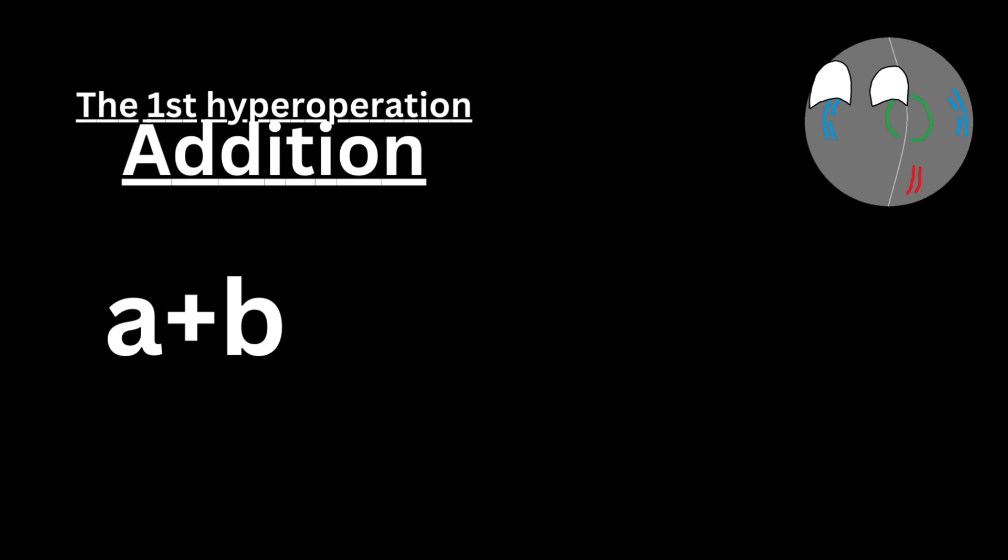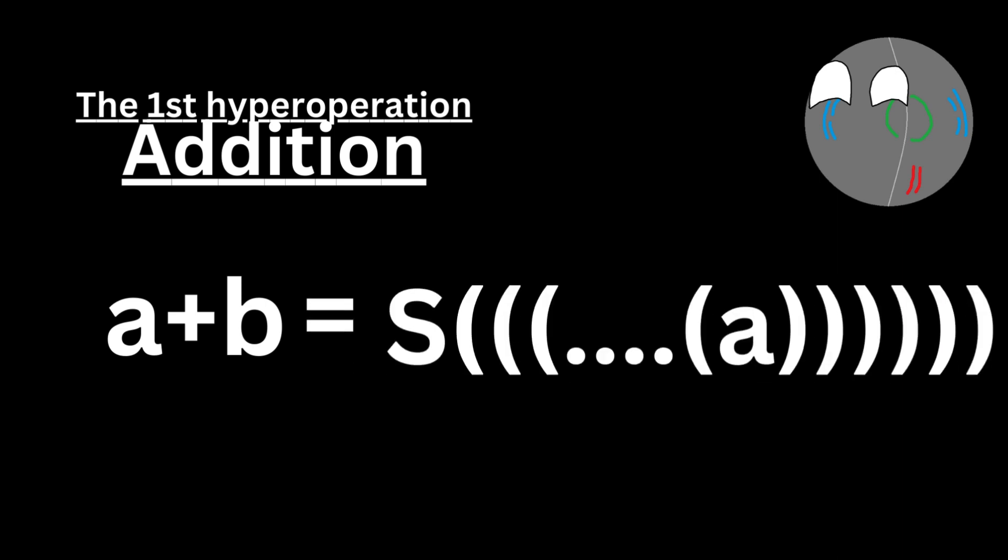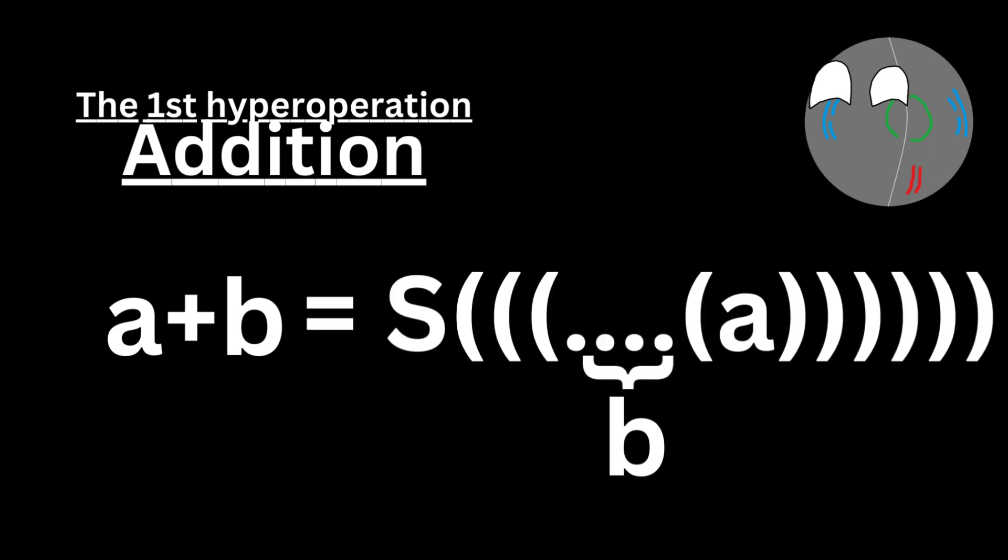Next is the first level of hyperoperation: addition. Addition is basically repeated succession. Taking two variables a and b, a plus b is equal to a succeeded b times — one is added to a, b number of times. Addition follows two properties: the commutative and associative properties, which I'm going to discuss in this video.